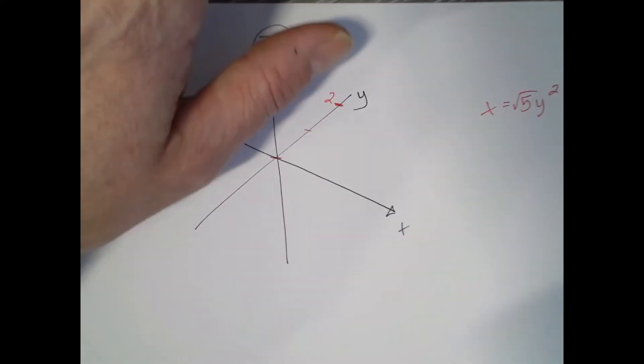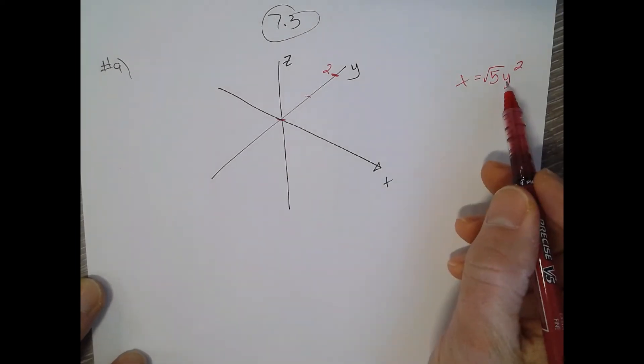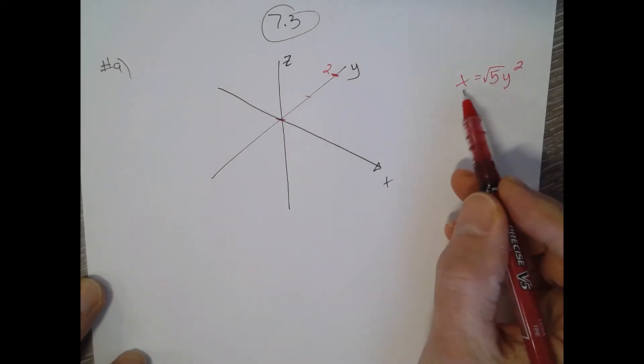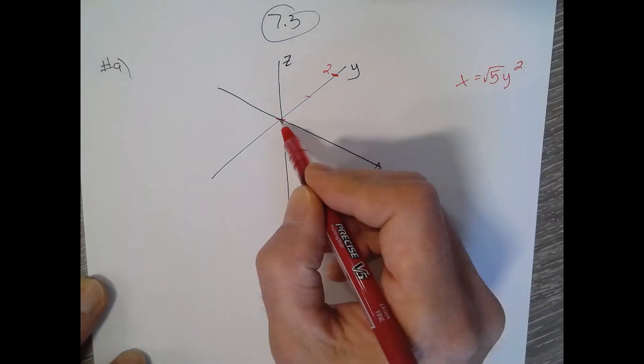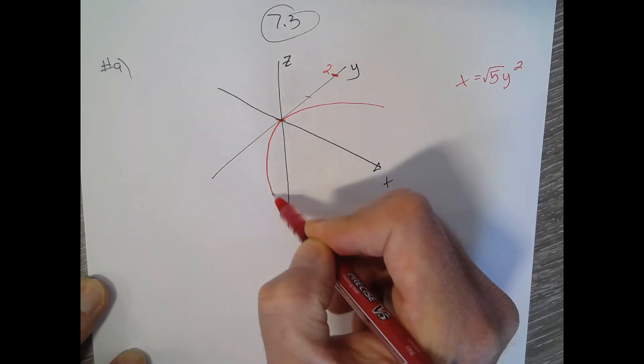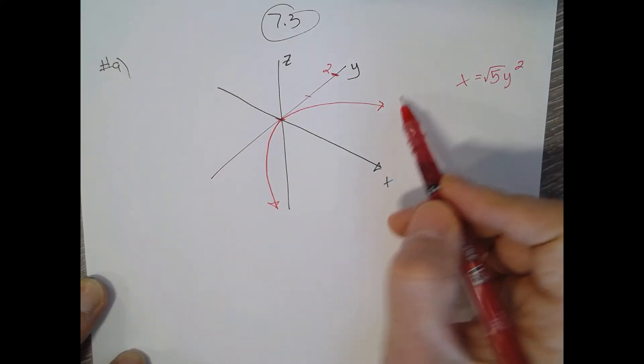But if it was just x equals y squared, let's think of that as y equals plus or minus the square root of x. So it's a sideways parabola, it looks like this. So that's x equals y squared, and for our purposes we're going to say that's x equals the square root of 5 y squared.